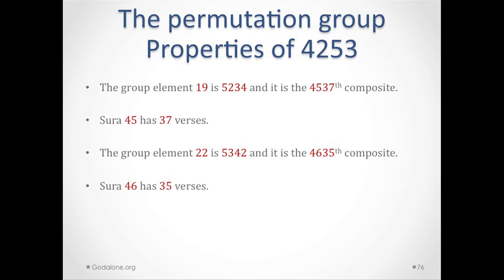The permutation group properties of 4253 — which tells you chapter 42 has 53 verses, being the exponent of the 19th Mersenne prime — give group element 19 as 5234 with index 4537. Chapter 45 in the Quran has 37 verses. Group element 22 is 5342 with index 4635, and chapter 46 in the Quran has 35 verses. With this mechanism we've already generated 3 of the 7 HM initial chapters and the number of verses in those chapters.